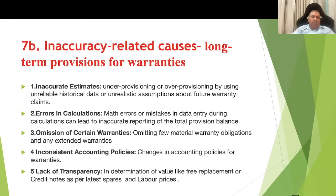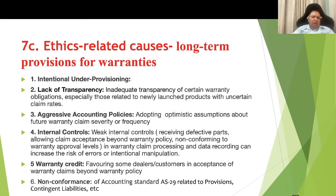Inaccuracy-related causes for long-term provisions for warranties: inaccurate estimates — under-provisioning or over-provisioning; errors in calculation of provisions, which could be mathematical errors; omission of certain warranties — omitting material warranty obligations; extended warranties with inconsistent accounting policies; and lack of transparency in determination of value, such as free replacement or credit notes as per latest spare and labor prices.